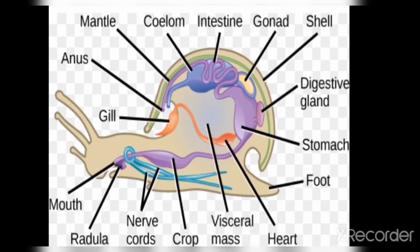Now let's move to the general characteristics, starting with digestion. If you look at the diagram, we will explain the digestive system from the diagram.